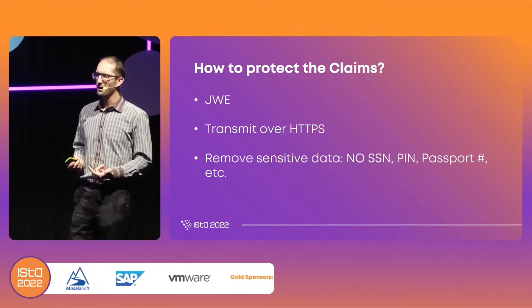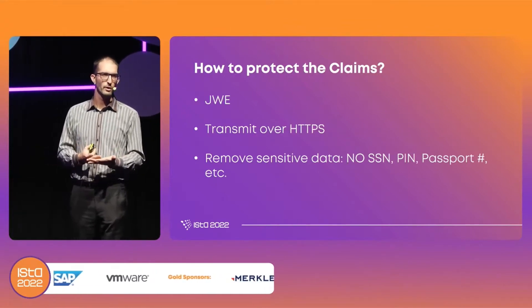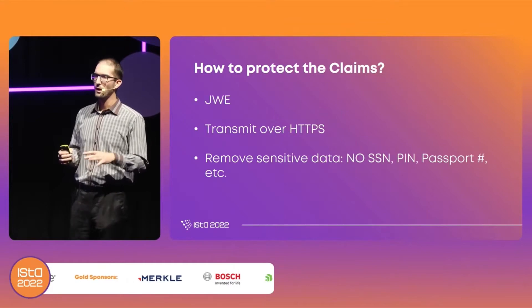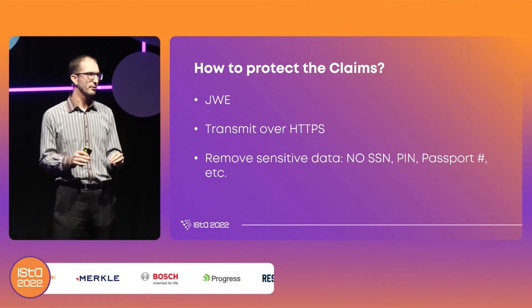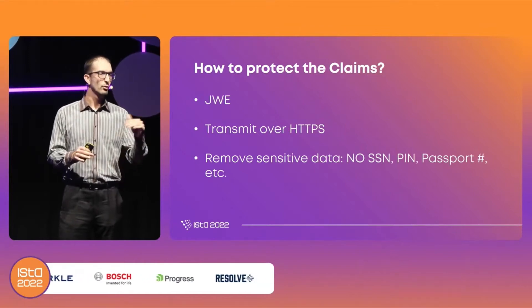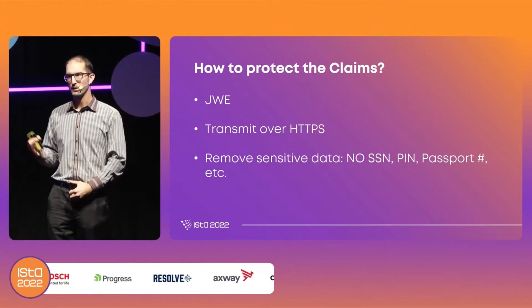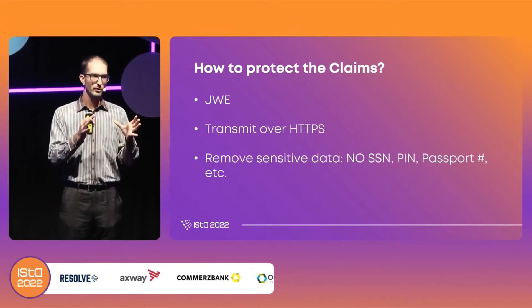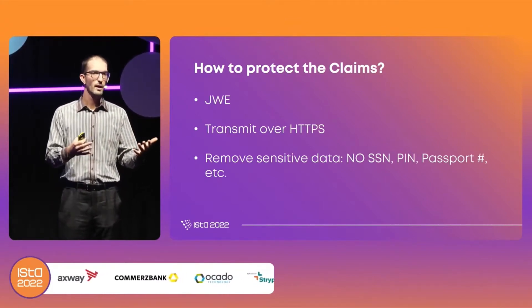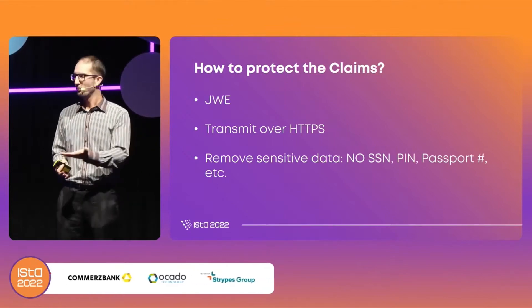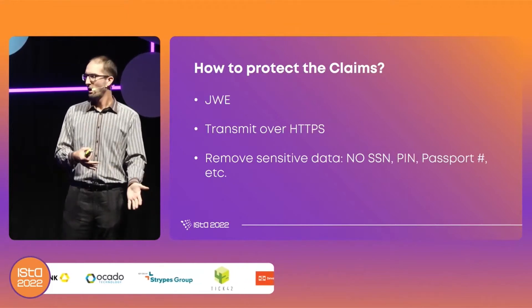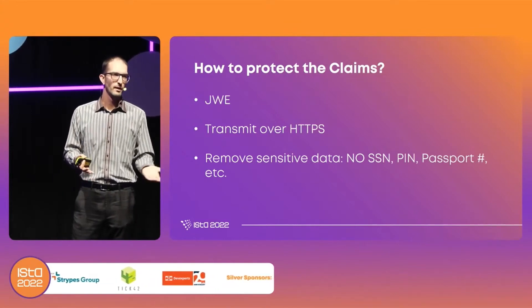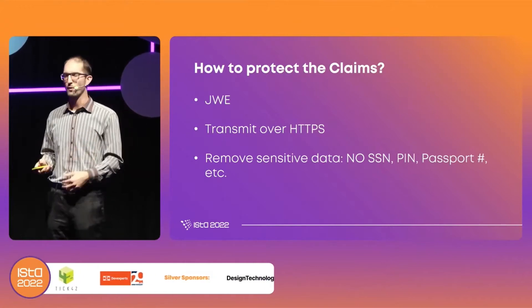If you don't want everyone on the internet to see what's in the token, one option is to use JWE. Another option is to use secure protocols like HTTPS, where everything is encrypted including the headers, and the token lives in the authentication header so it's encrypted as well. Also important: don't put sensitive information in the token — no social security number, personal identification number, or passport ID. Just put information that's enough to authenticate on a server.